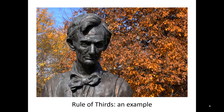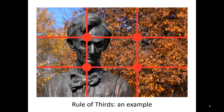Here's a photograph of Abraham Lincoln at the Macon County Historical Society. When I took this picture, I wanted to make sure that the whole statue of Mr. Lincoln was on the left vertical line — rule of thirds. And you can see that the eye, the one that's not in shadow, is very close to the power point on the upper left.